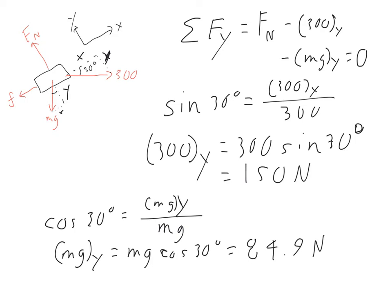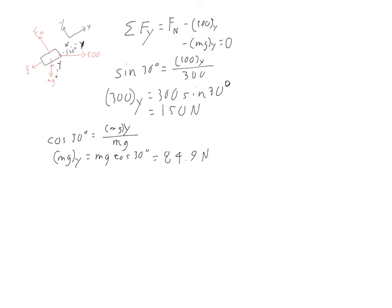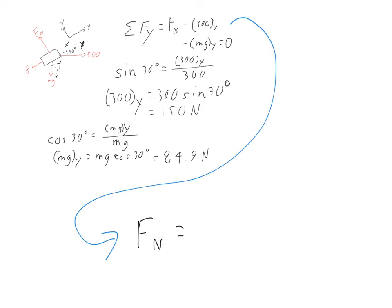From the sum of forces in the y direction, we know the y component of the applied force and the y component of the weight, so it's now relatively easy to solve for the normal force with one step of algebra. We find that the magnitude of the normal force equals the y component of the applied force plus the y component of the weight, giving 234.9 newtons.